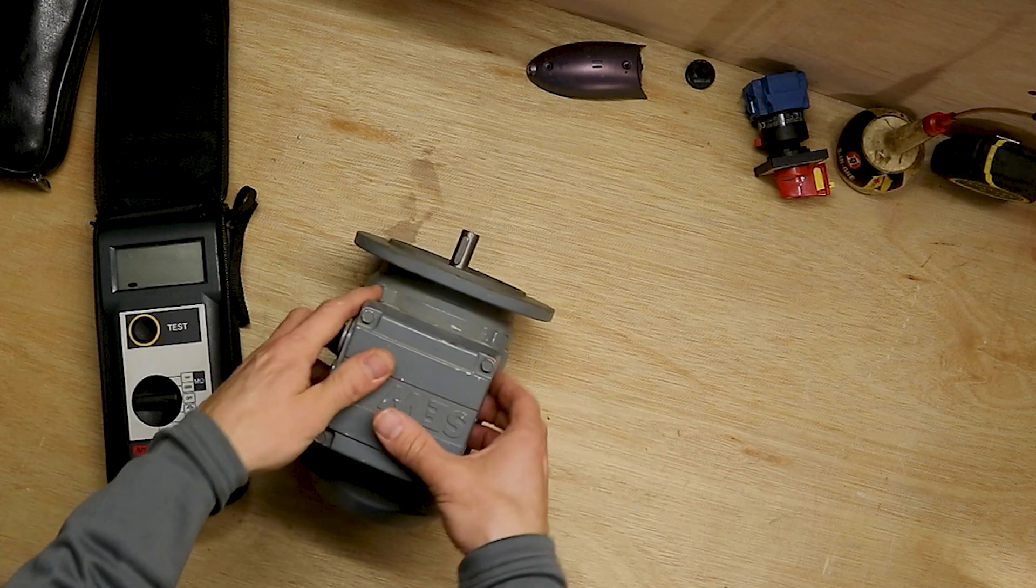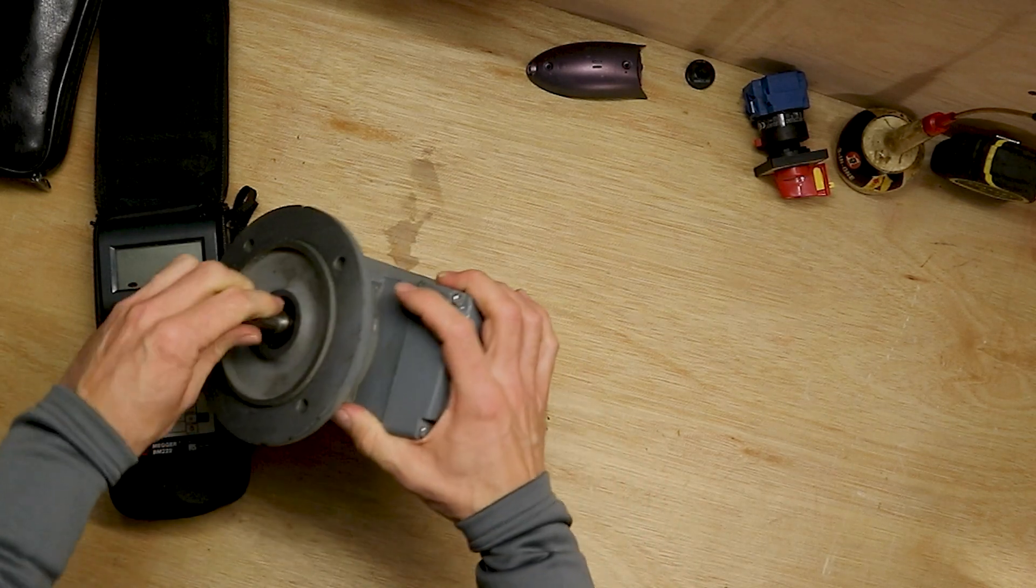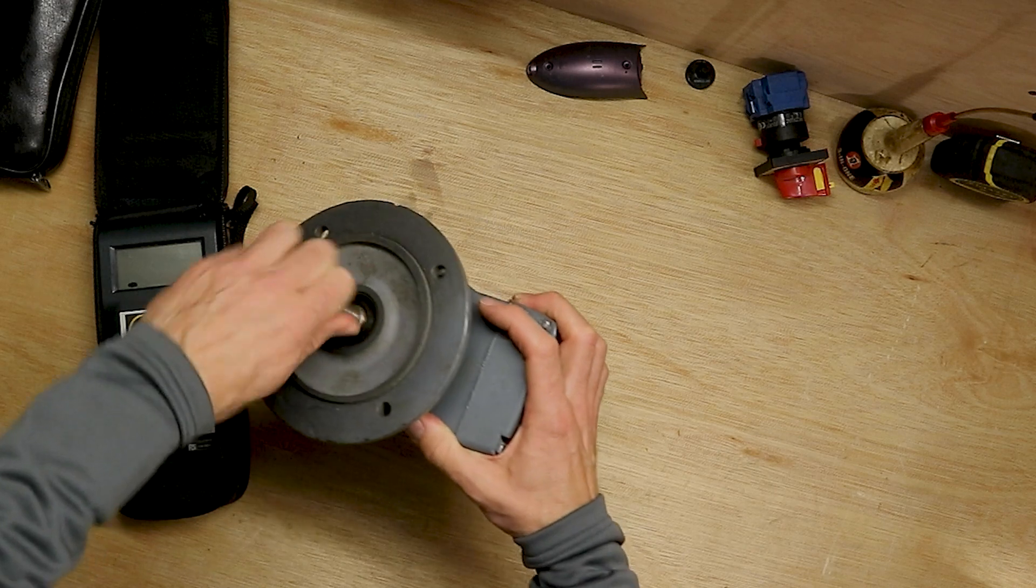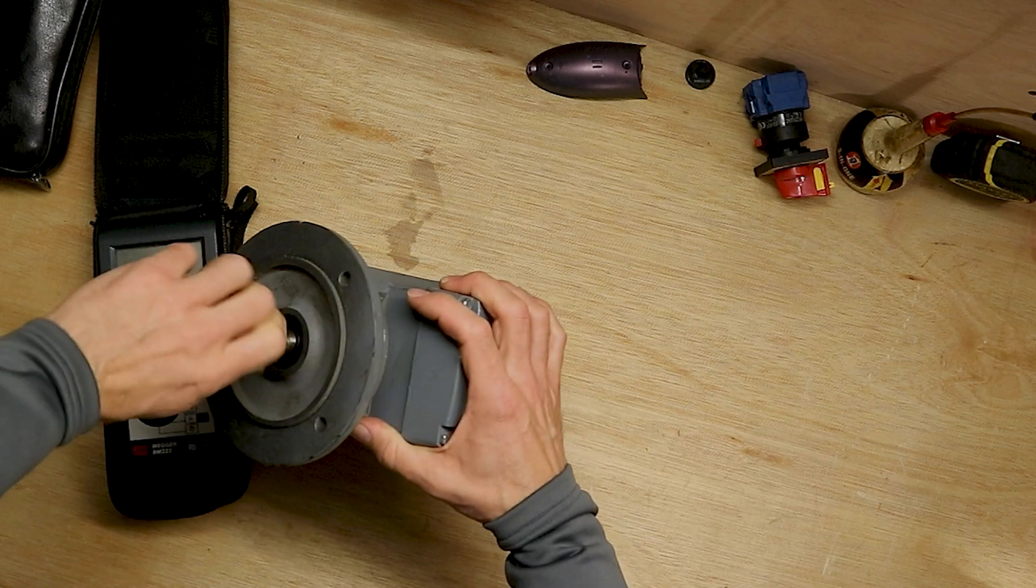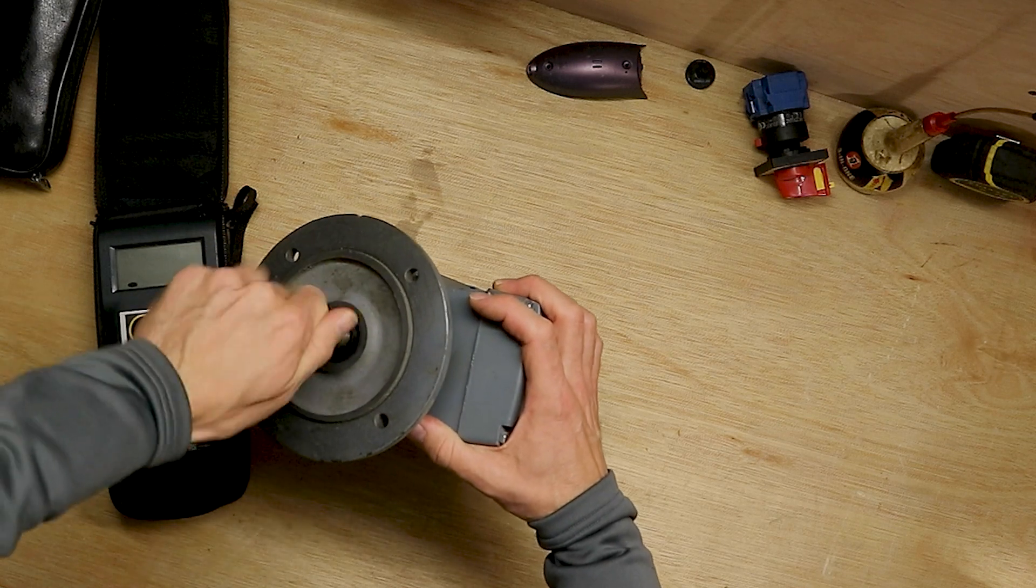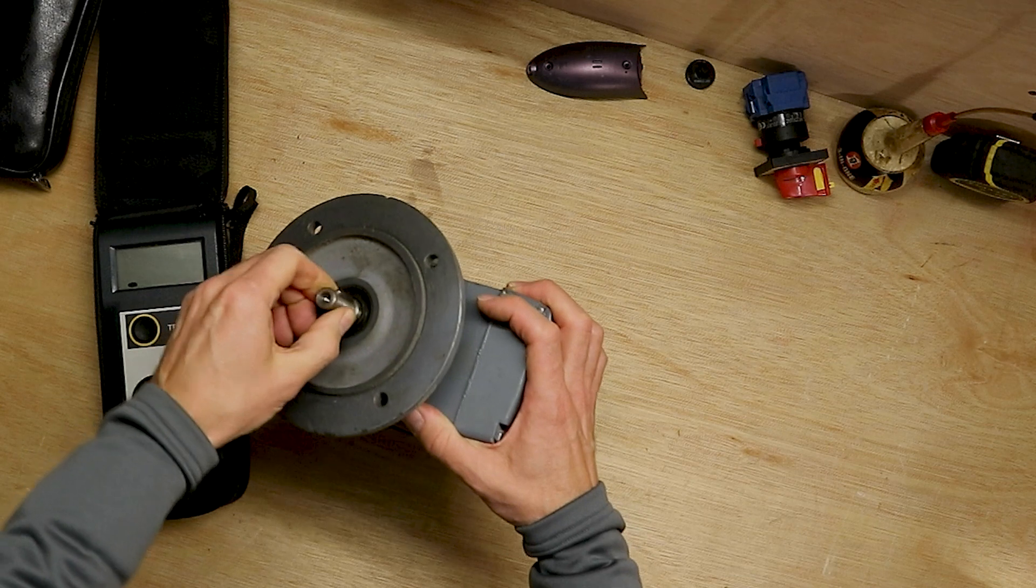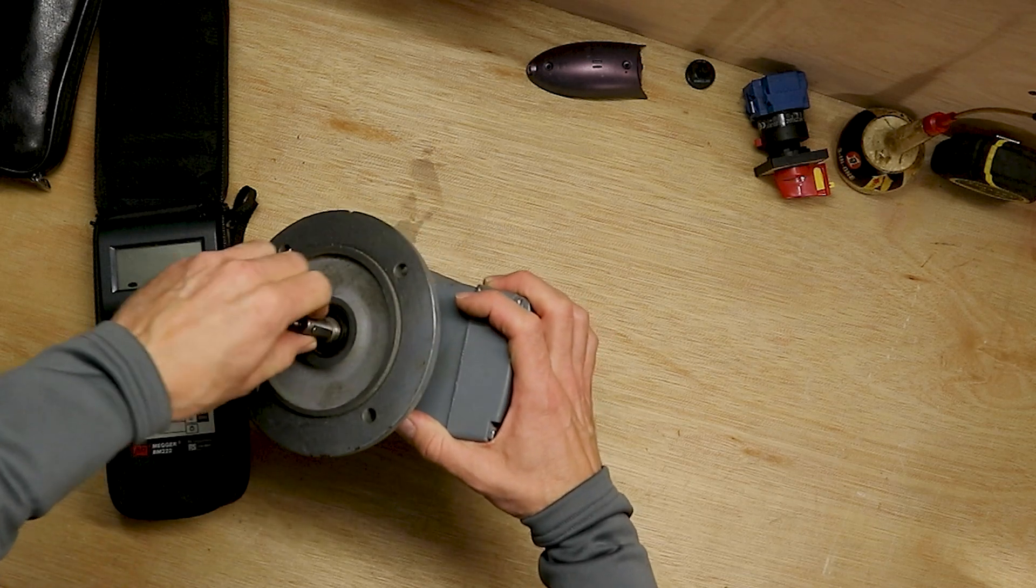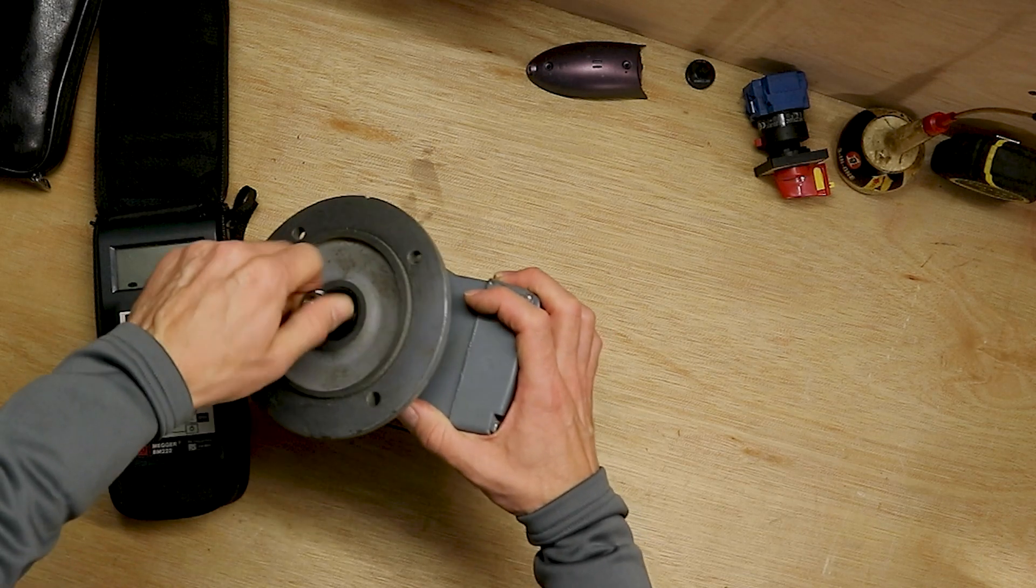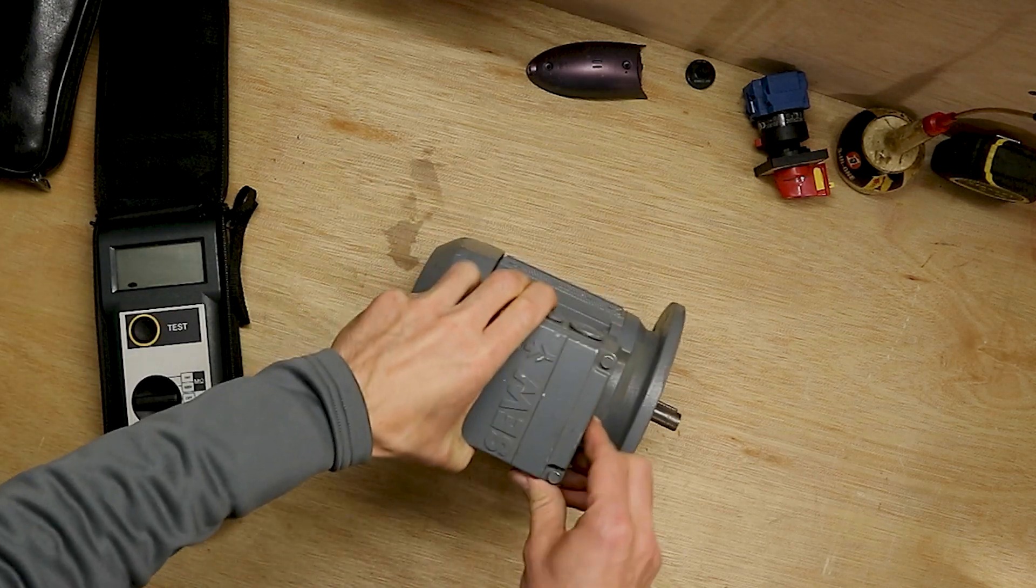One of the first tests that we can do is to check that the bearings are okay. We want to check any mechanical looseness here, any noise, any friction, any grumbling bearings, just some basic checks. Make sure it feels tight, it's not too loose, there's no noises in there, no grumbling. All feels good.